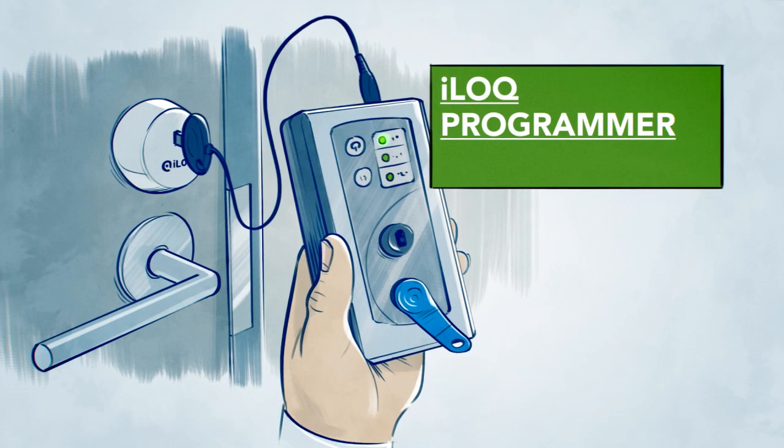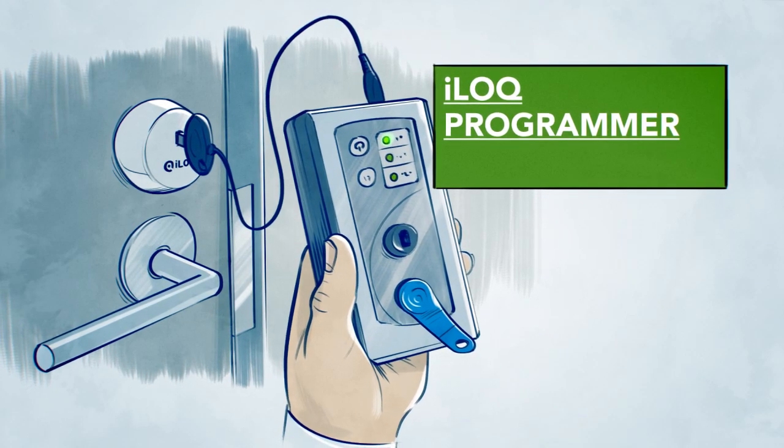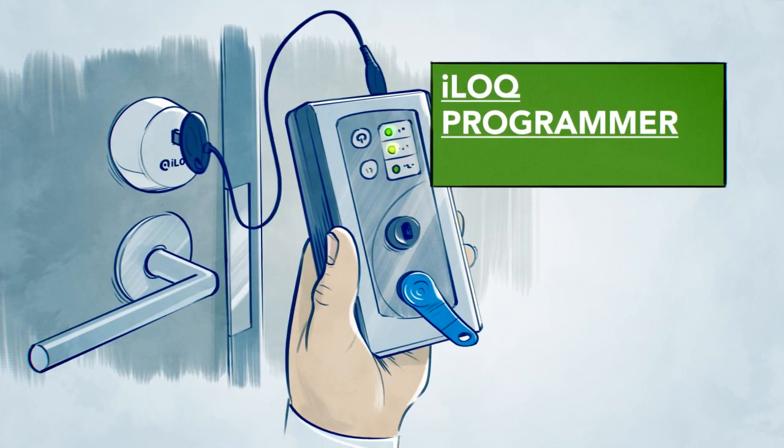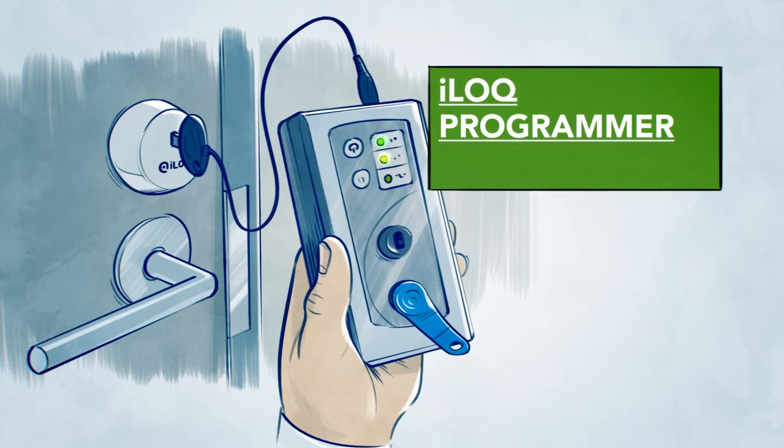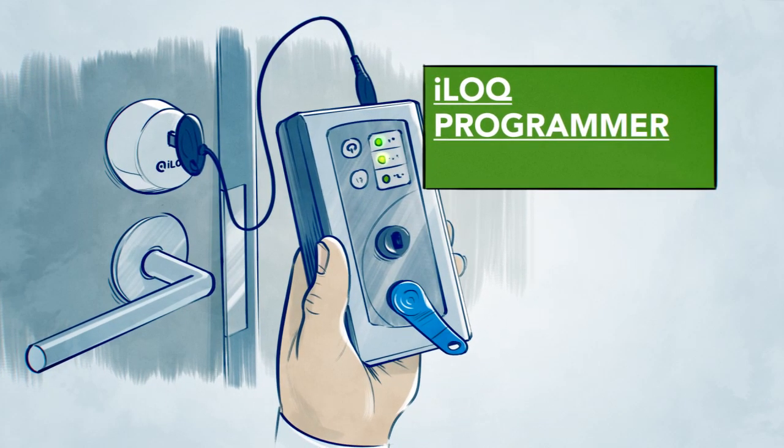Access rights are stored in the key and the lock by a programming device. A separate master programming key secures the device.